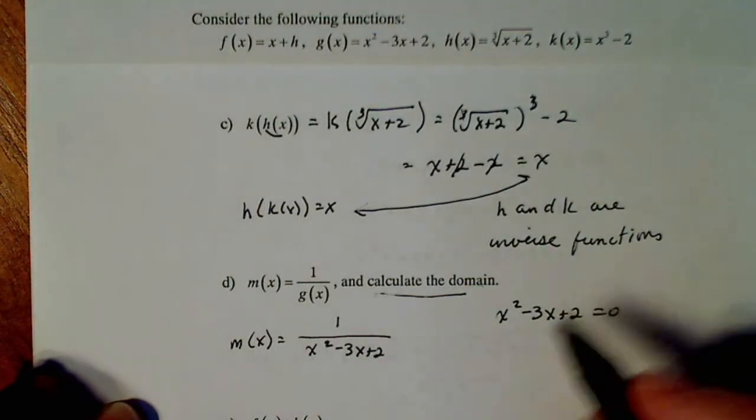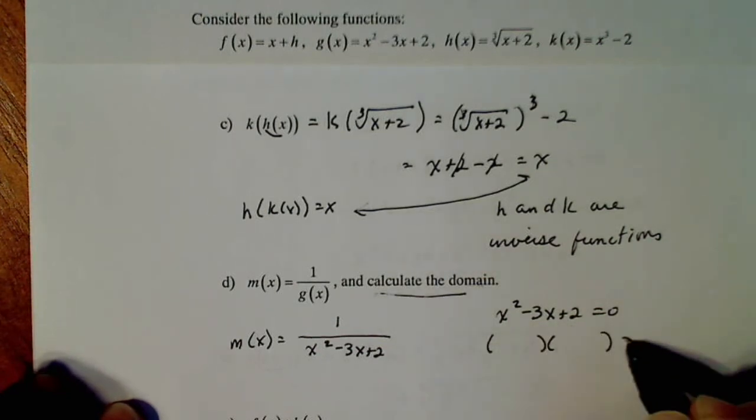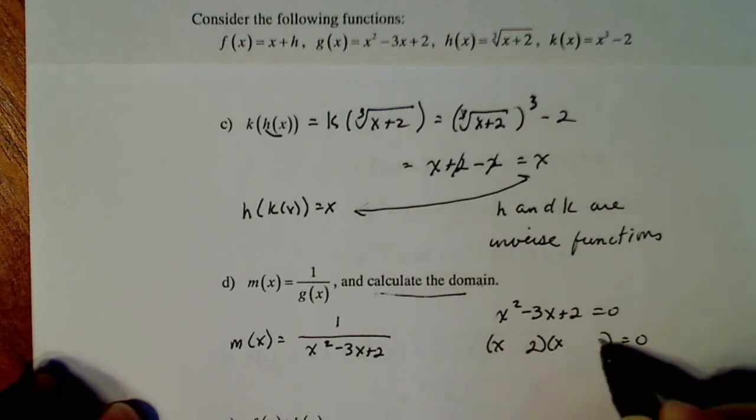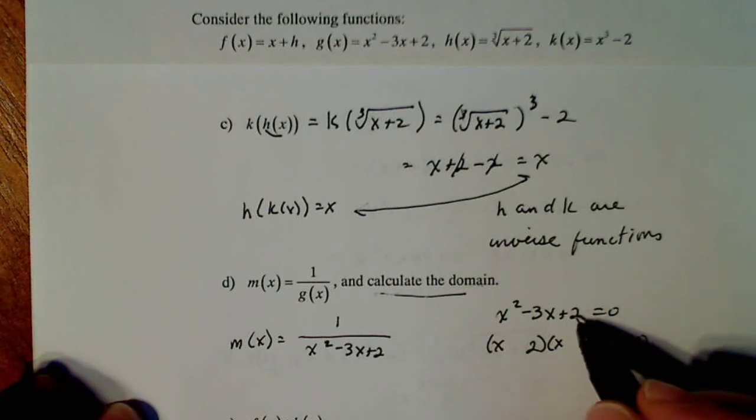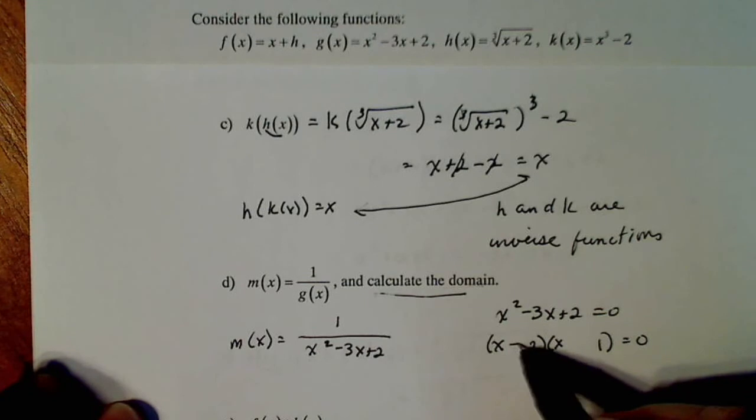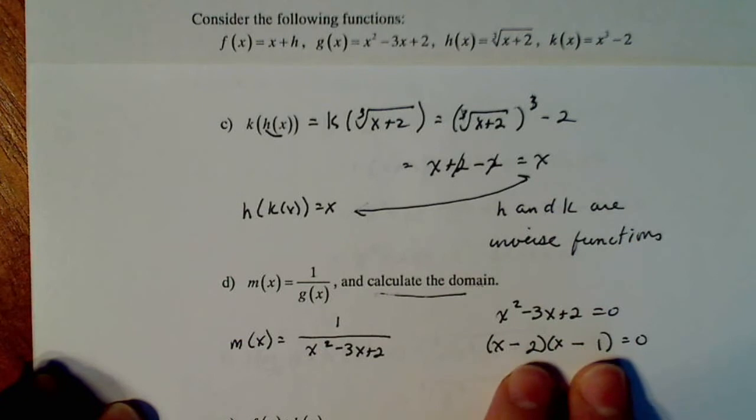If we remember factoring, this is a quadratic. I'm going to factor it. X is first. Two times one is the only pair that multiplies to get 2. But I need negative 3, so if I make both negative, the sum is negative 3 and the product is positive 2, which is what I want.